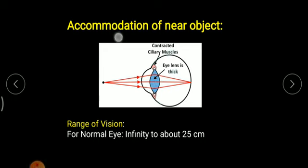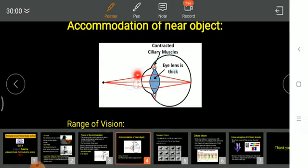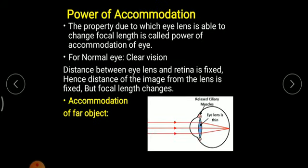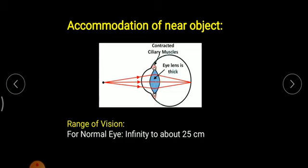For near point vision, as we have seen, the near point of a normal human being is 25 centimeters. Rays of light coming from exactly 25 centimeters will form an image at the retina, but the structure of the lens changes — the lens becomes thicker and ciliary muscles become contracted. So for near point vision the lens gets thicker and ciliary muscles contract, whereas for infinite distance the ciliary muscles relax and the lens becomes thin. This is the difference between near point and far point accommodation.